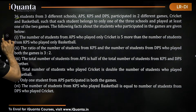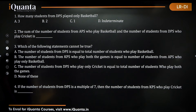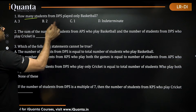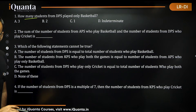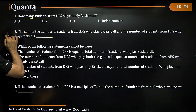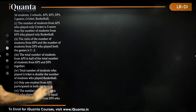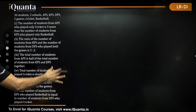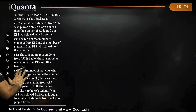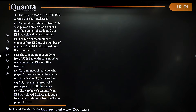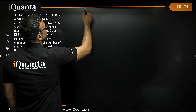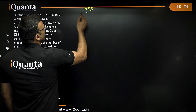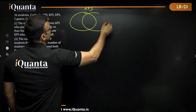Let us take a look at the questions. We need to resolve the data first and then come back to the questions. Let us come to this slide where we have some space. We draw the diagram and start putting the values according to the information given. So we have APS, KPS, cricket, and basketball.